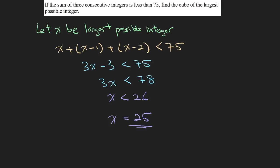You are not done, because they want you to find the cube of the largest possible integer. The cube simply means you multiply the number by itself 3 times. So x cubed is 25 times 25 times 25, which equals 15,625.